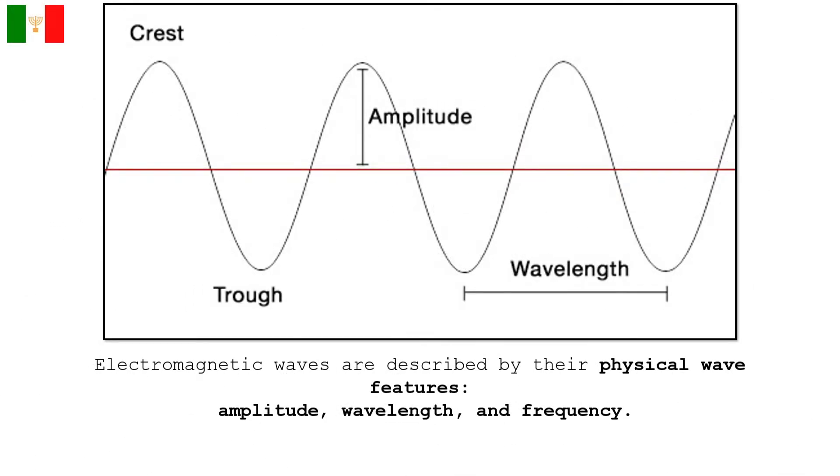Electromagnetic waves, like all types of waves, are described by their physical wave features, such as amplitude, wavelength, and frequency. These are the characteristics that can vary and thereby produce many different kinds of electromagnetic waves.